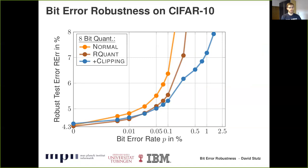Second, we use weight clipping during training, constraining weights to a small interval using projections. We found this regularizes the DNN to learn more redundant weights, because the network must use more weights to produce large logits that minimize cross-entropy loss. This redundancy introduces robustness in the weights, as shown in the blue curve. Especially for high bit error rates, the robust test error is decreased significantly.